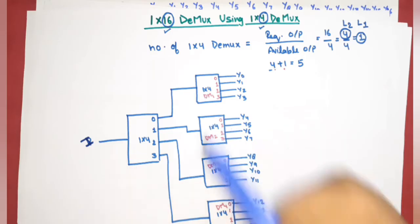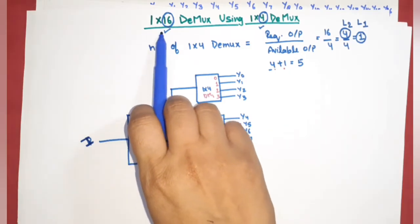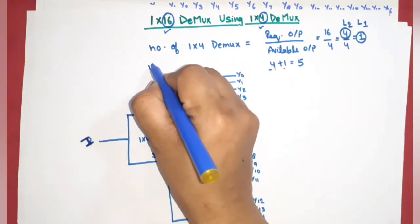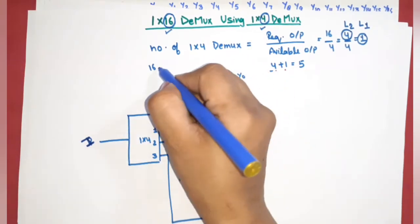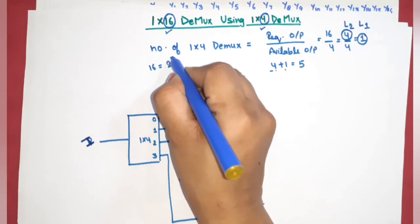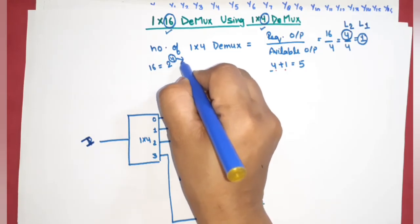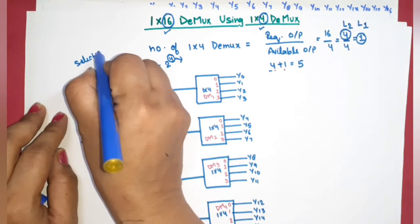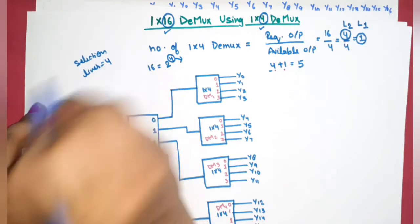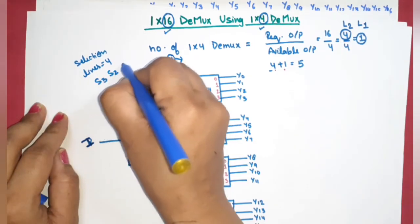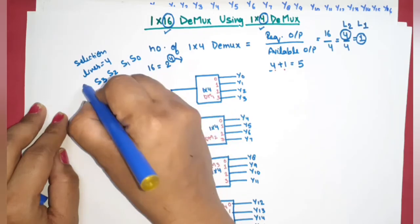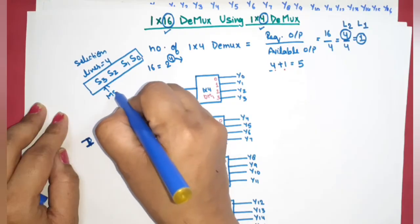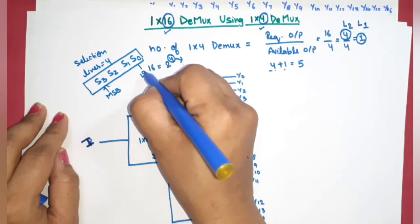Now for the selection lines: our required demultiplexer is 1-to-16. For 16 outputs, we write 16 = 2 raised to power 4, which means 4 selection lines are required. So selection lines = 4: S3, S2, S1, S0, where S3 is the MSB and S0 is the LSB.